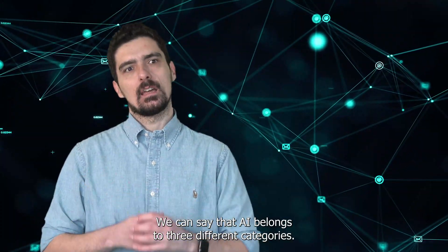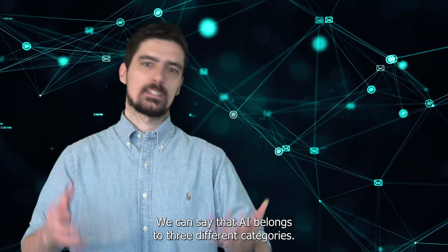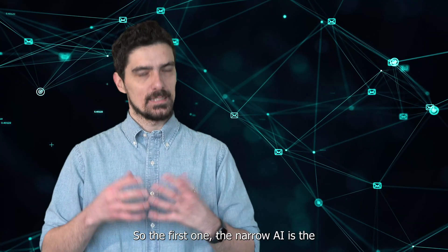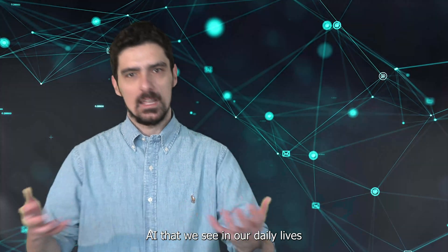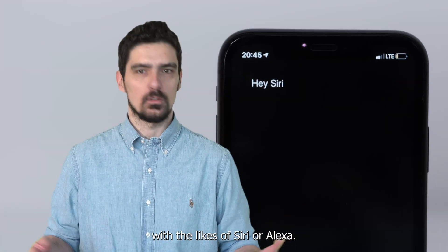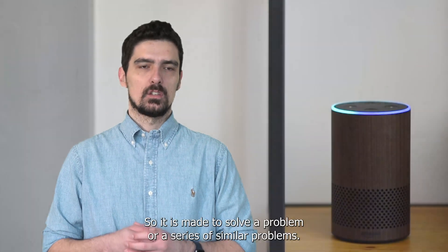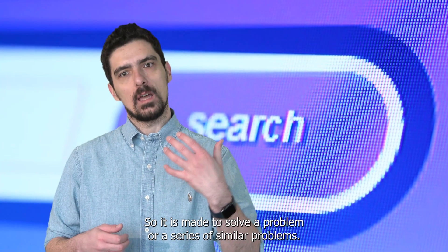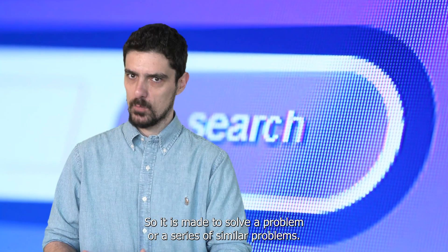We can say that AI belongs to three different categories. The first one, narrow AI, is the AI that we see in our daily lives with the likes of Siri or Alexa. It is made to solve a problem or a series of similar problems.